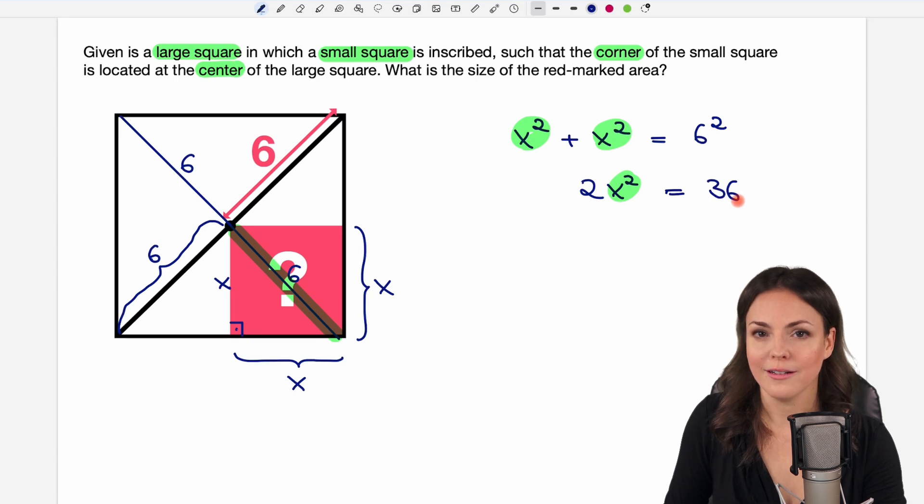If we want to solve our equation for x we have to get rid of this two here so we can just divide both sides by two so that the two cancels out on the left side and only x squared is what is left and on the other side 36 divided by two is 18.